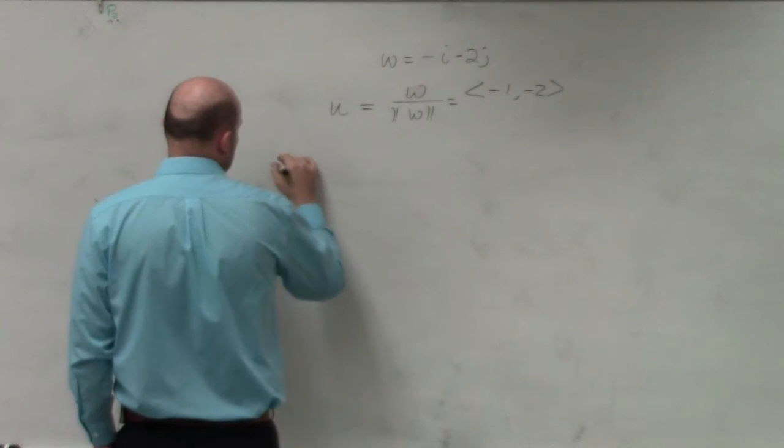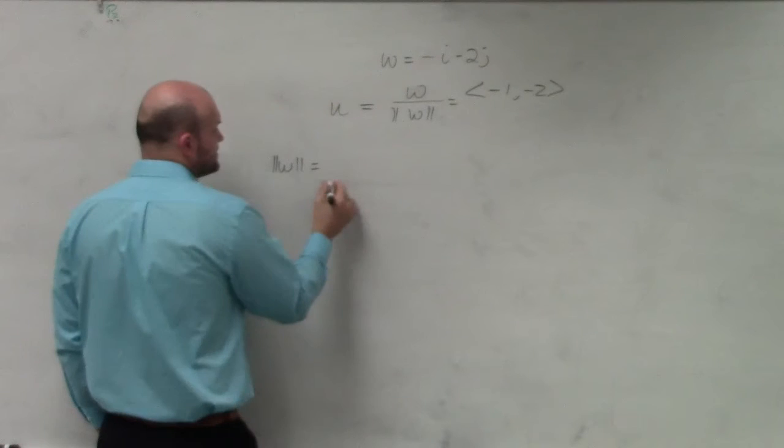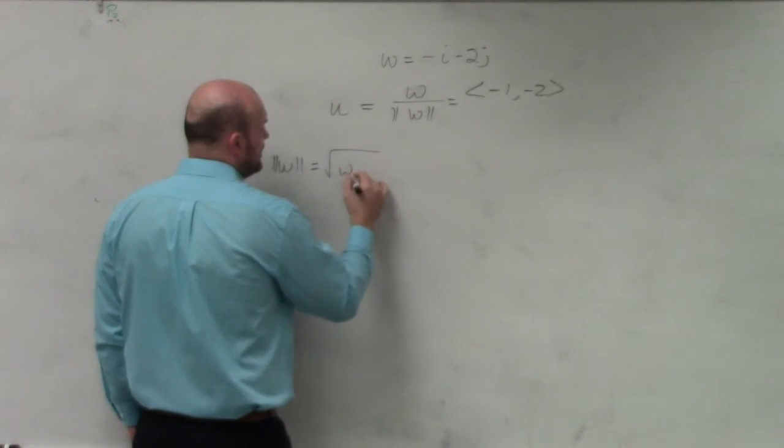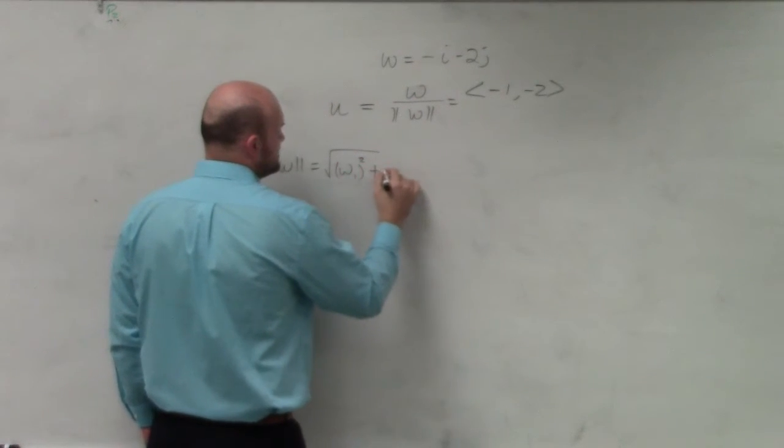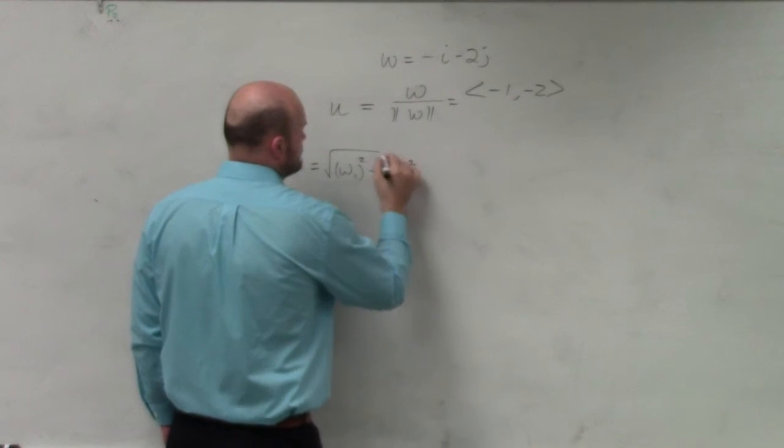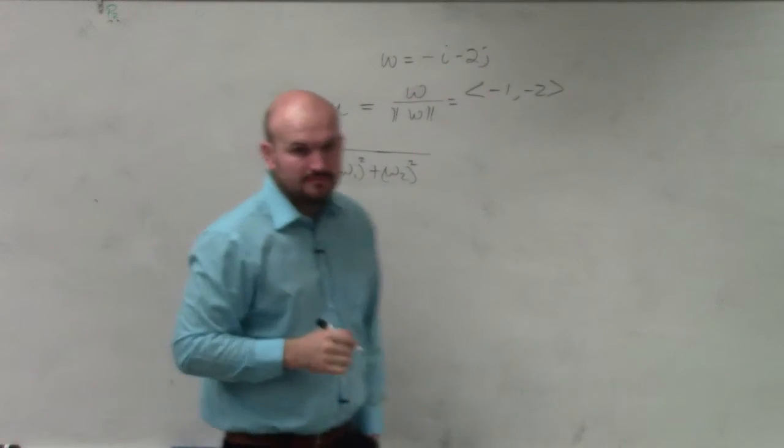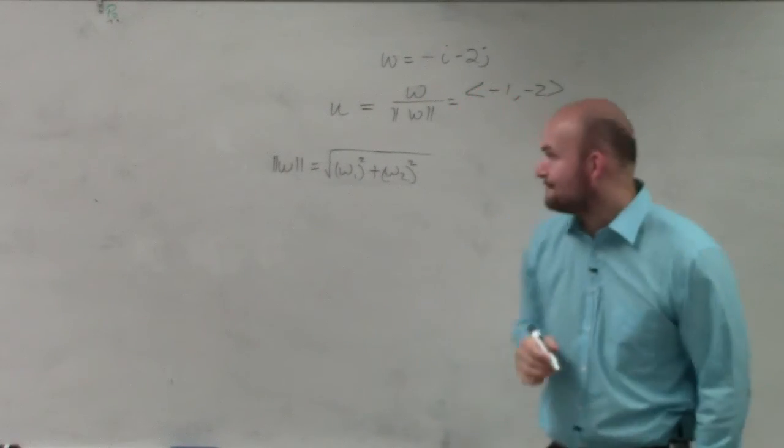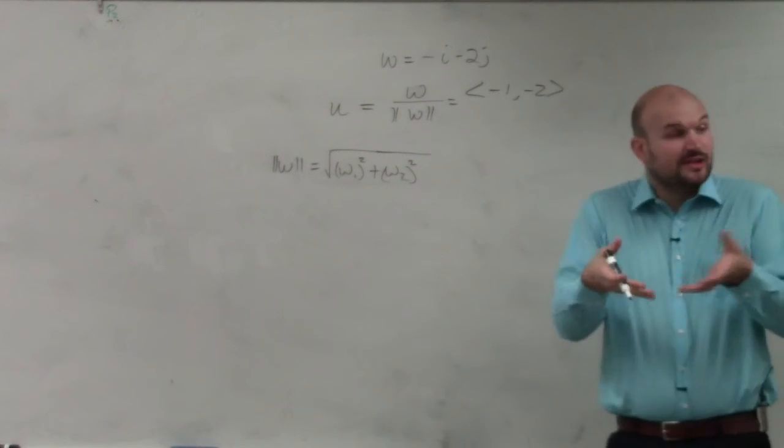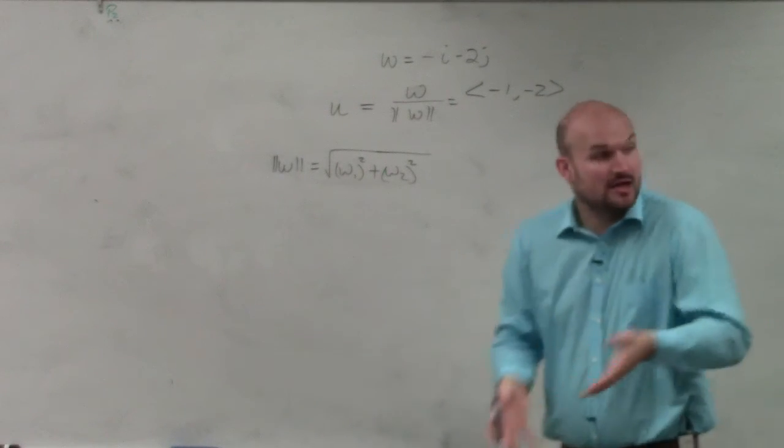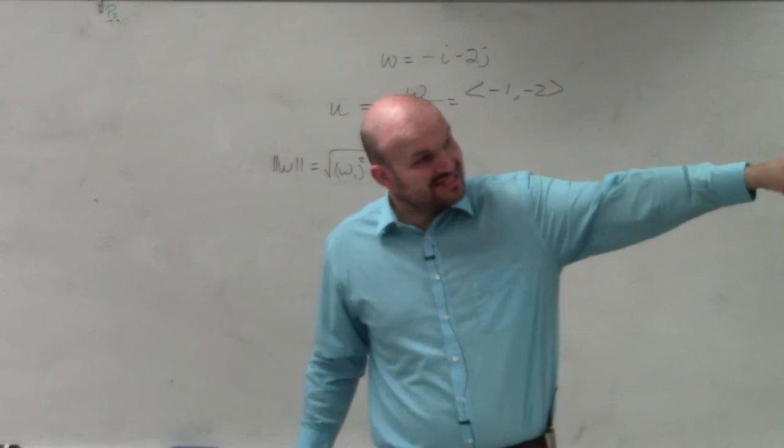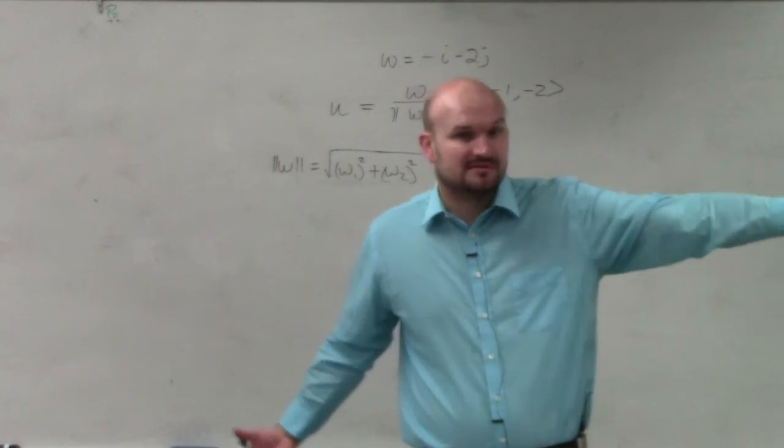So the magnitude of w is going to equal w1 squared plus w2 squared. So it's really first component squared plus second component squared, which again I will remind you, it's the same thing as the Pythagorean theorem. That's what's so nice about it.